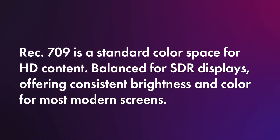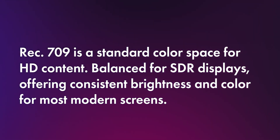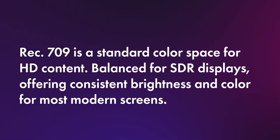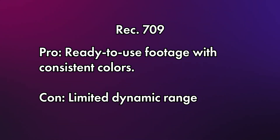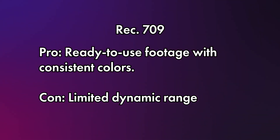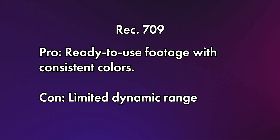Rec.709 is a standard gamma curve that you've likely encountered if you've done any video production. It's designed for standard dynamic range displays — most TVs and computer monitors. It provides baked-in contrast, saturation, and brightness levels that look pretty good straight out of camera, making it good for projects with tight deadlines or minimal grading requirements. Maybe you're shooting an interview for a corporate client and they just want the footage as quickly as possible — Rec.709 ensures it looks good right out of camera. The downside is it doesn't have the dynamic range of CLog3, so in high contrast scenes you might risk losing details in either the highlights or the shadows.